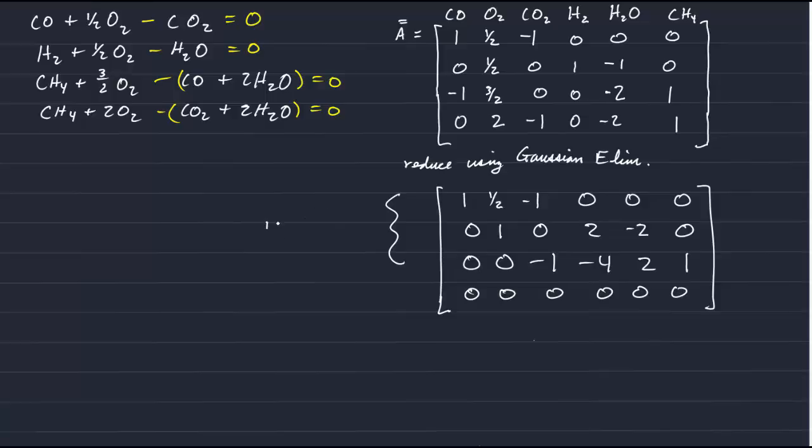So this tells us, again the rank of A is equal to 3. And this means there are only 3, not 4, independent reactions. There are 1, 2, or more reactions in this 4 reaction system that can combine to produce another reaction.